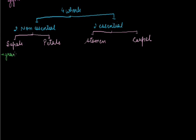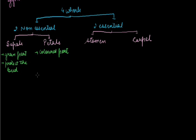Sepals are basically the green part of the flower; they protect the bud. The group of sepals is known as calyx. Second, we are discussing petals. Petals are the colored part of the flower, and their main function is to attract insects for pollination. The group of petals is known as corolla.